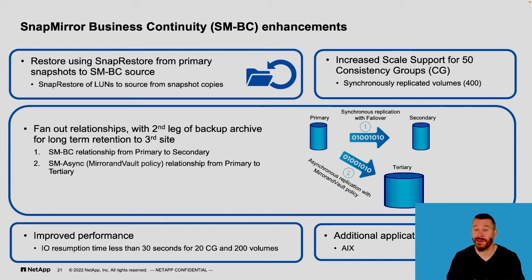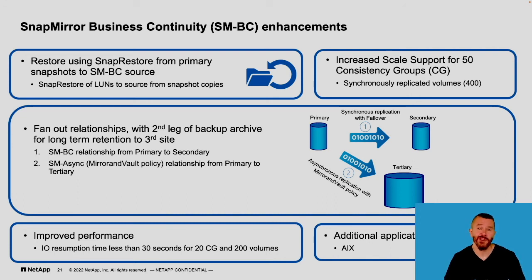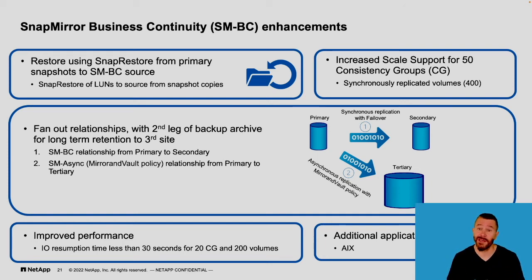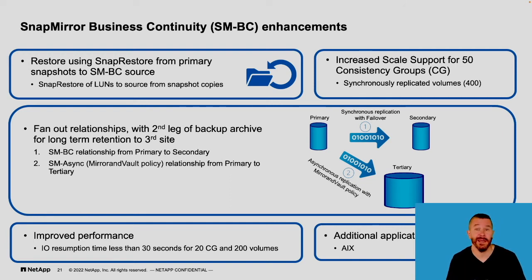SnapMirror Business Continuity gives you zero recovery point objective and near-zero recovery time objective between two sites. But you may want a third site — an air gap — to allow a longer-term archive. With the latest release of ONTAP, we now support that as well: the ability to do a fan-out, so you have SnapMirror Business Continuity across two sites for near-instantaneous failover with no data loss, and also replicate that data to a third site at infinite distance, giving you an archive copy that's air-gapped at a remote location.